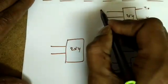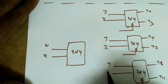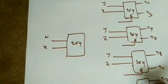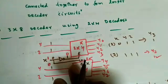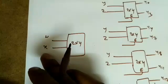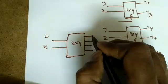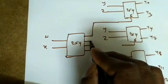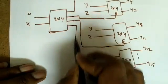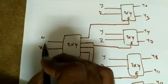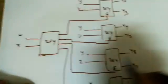The controlling 2x4 decoder takes the two MSBs, w and x, as inputs, and generates four outputs — one for each enable pin of the four 2x4 decoders. The LSBs y and z are the data inputs to all four decoders. At any time only one enable output is high based on the value of w and x, activating only one of the four 2x4 decoders.